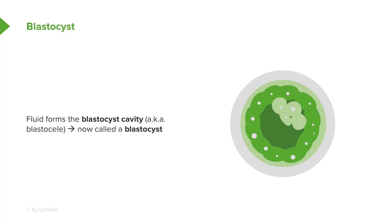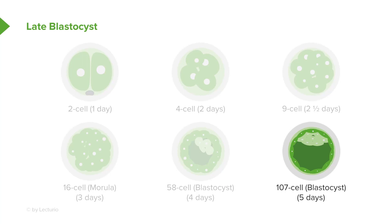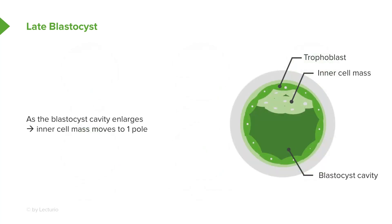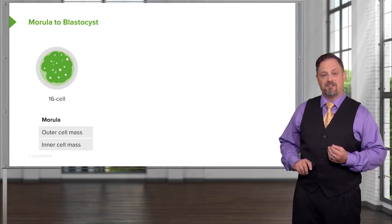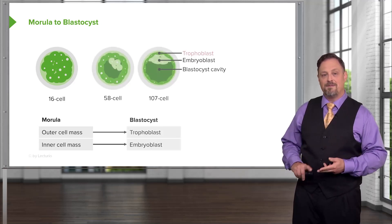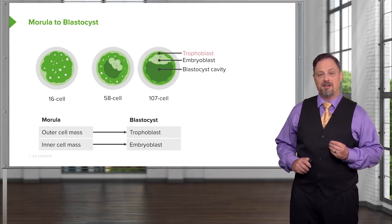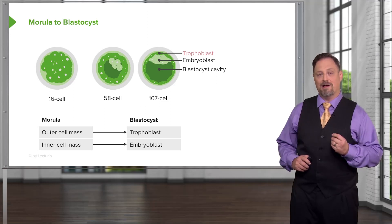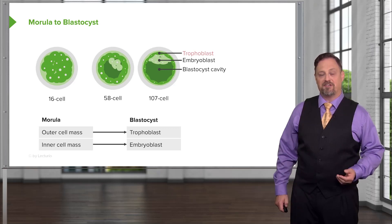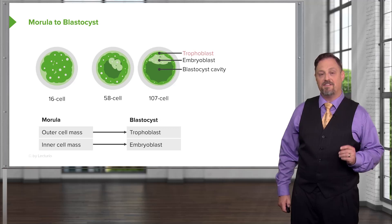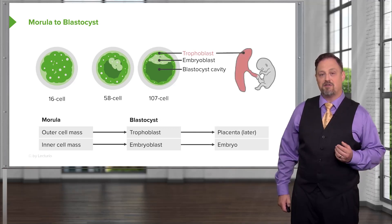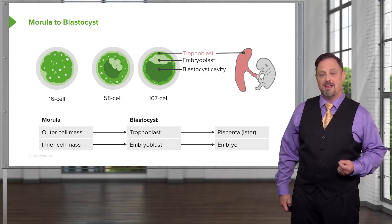The early blastocyst has roughly 58 cells and will continue to develop to roughly the 107-cell stage after five days, called the late blastocyst. It features a fluid-filled cavity surrounded by outer cells and a cluster of inner cells pushed off to one pole. The inner cell mass and outer cell mass form very distinct structures: the outer cell mass transitions into the trophoblast, and the inner cell mass becomes the embryoblast. The embryoblast generates all the tissues of the actual embryo and fetus, whereas the trophoblast becomes the supporting tissues of the placenta and umbilical cord.